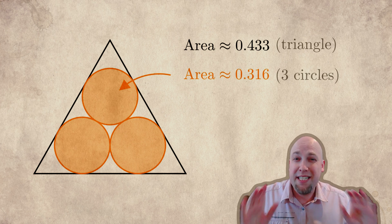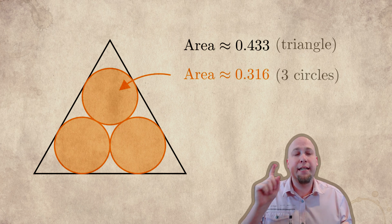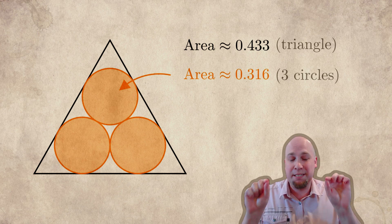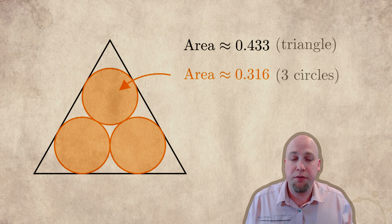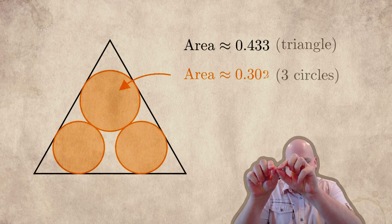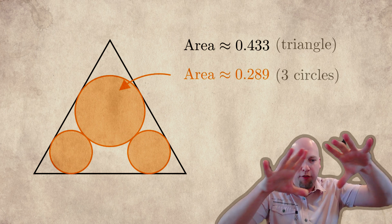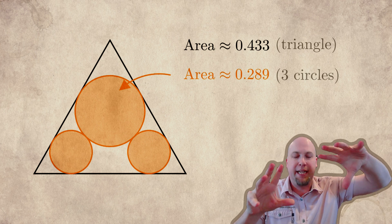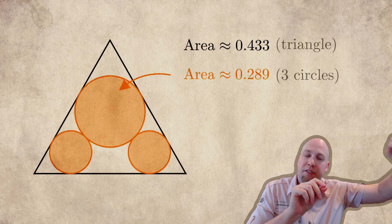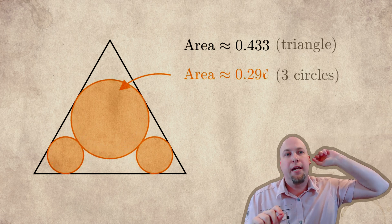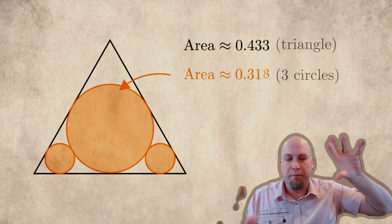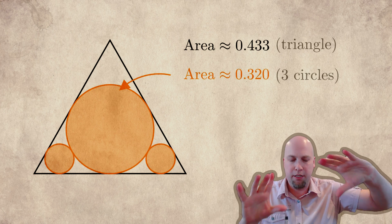But if you take this idea and run with it, if you make the top circle larger at the expense of making the bottom two circles smaller, yeah, at first, the area covered is going to go down a little bit, but then something happens when the first circle, the top one gets big enough, then the area covered starts to sweep back up.